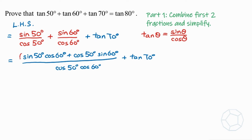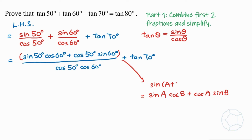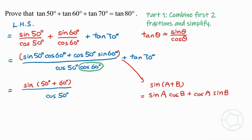Next, we put the two fractions together. The numerator has the form sine A cosine B plus cosine A sine B. Using the compound angle formula, this simplifies to sine(A plus B), giving us sine(50 degrees plus 60 degrees) in the numerator. The denominator is cosine 50 degrees times cosine 60 degrees, and we change cosine 60 degrees, a special angle, into one half. Plus tangent 70 degrees.